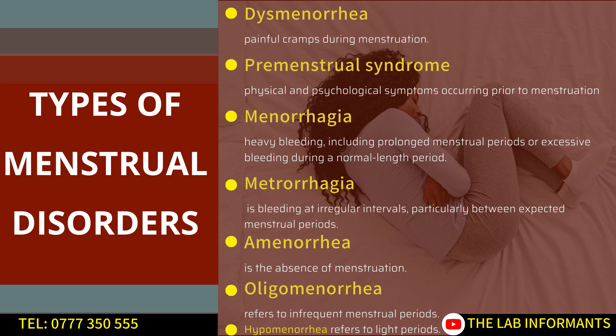Another type of menstrual disorder is menorrhagia, which means experiencing heavier bleeding than normal, or bleeding that lasts longer than the usual number of days. We also have amenorrhea, which in simple terms means not having a period — missed periods. With amenorrhea, a woman may miss her period for several months, possibly two, three, four, five, six, or even more months.